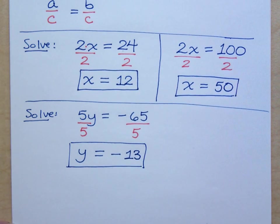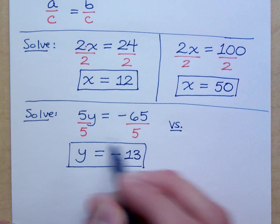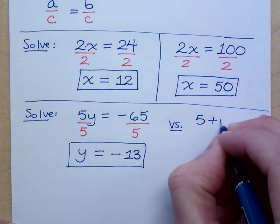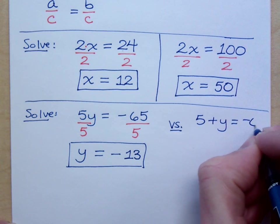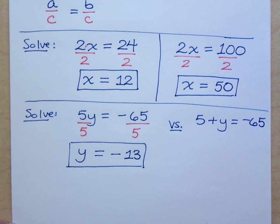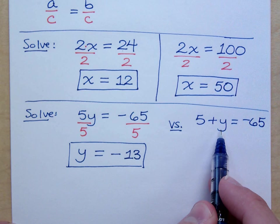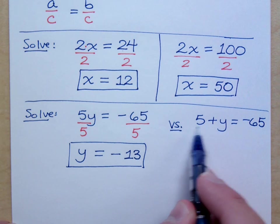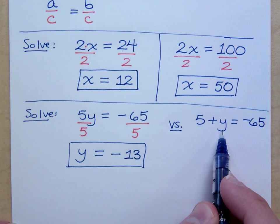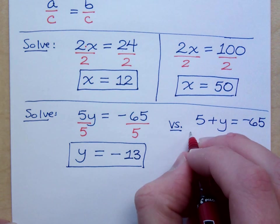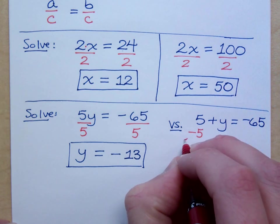Now, I want you to be careful here, because you have to pay attention. Compare this equation here to this one. 5 plus y equals negative 65. Are these two equations the same? Notice here, the 5 is not connected to the y as a coefficient. You have two separate terms because of the addition symbol. So in order to get the y by itself, you have to subtract the 5.